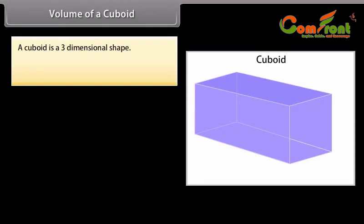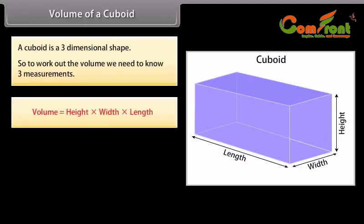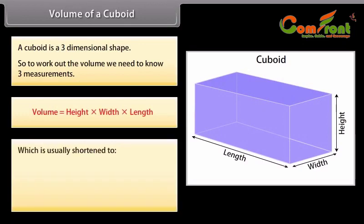A cuboid is a three-dimensional shape, so to work out its volume we need to know three measurements. Look at this shape — there are three different measurements: height, width, and length. The volume is found using the formula V = H × W × L, or more simply, V = LWH.